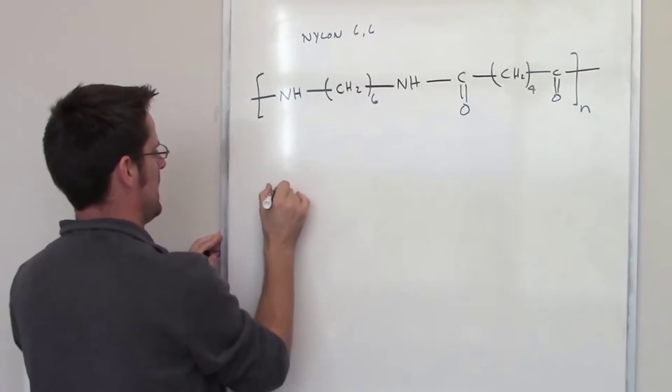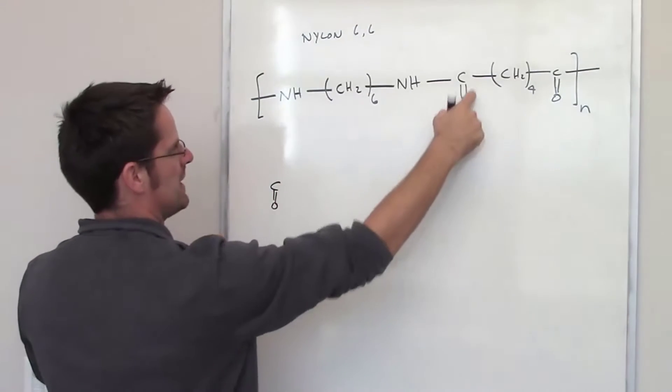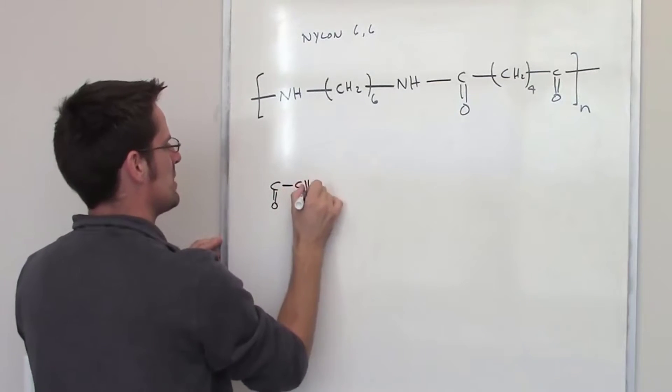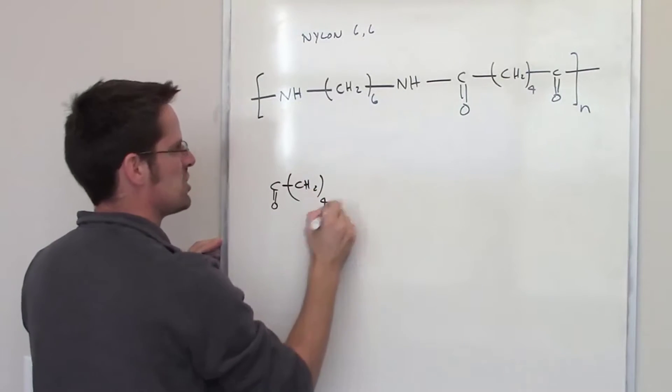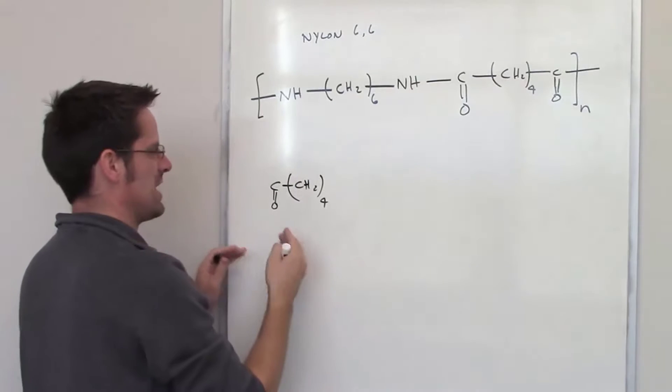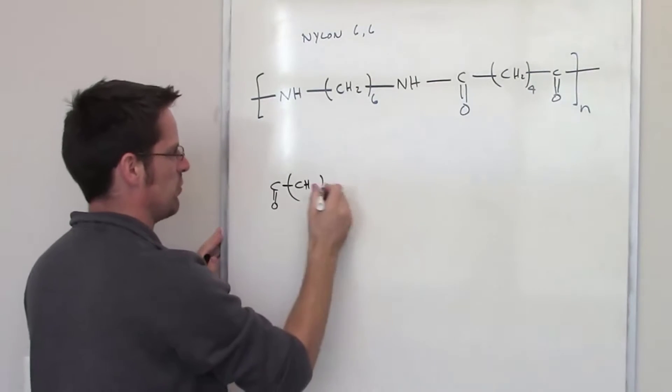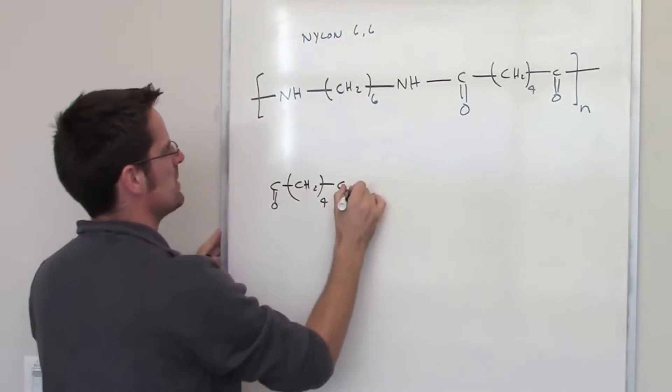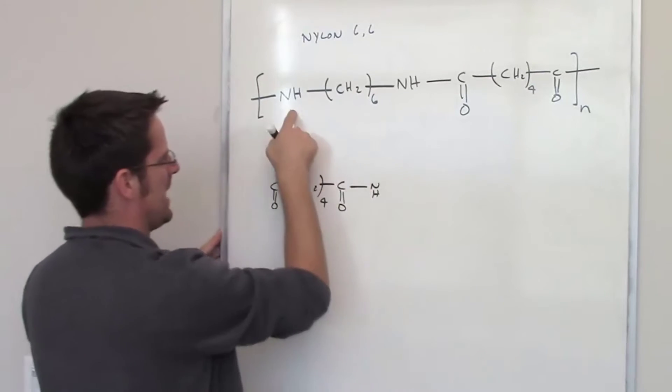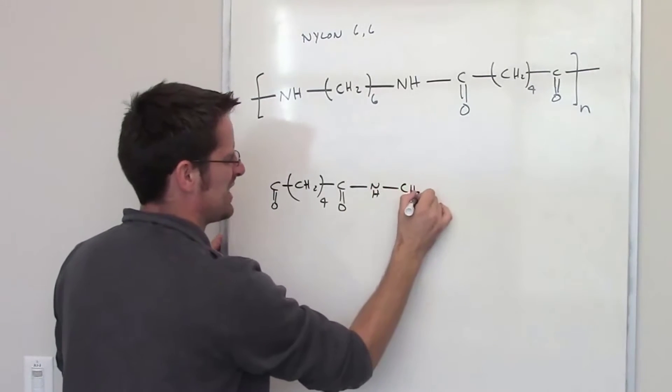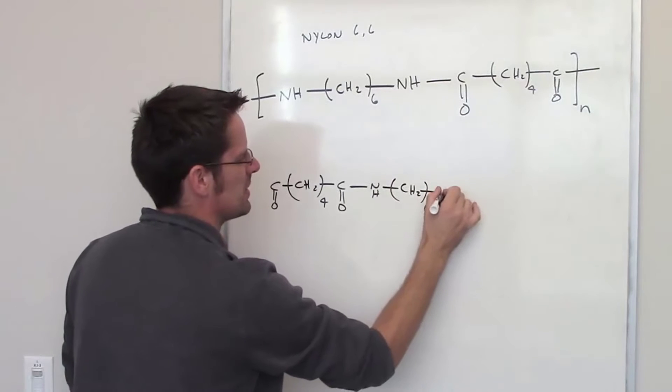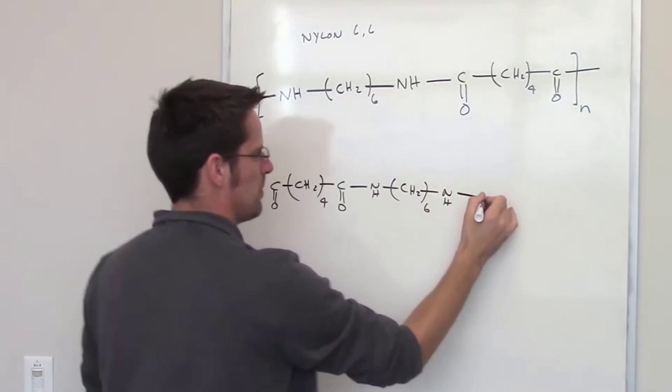So, let me see if I can redraw that. So, you can imagine, for example, what I've got is I've got this carbon here, double bonded to an oxygen, stuck to four CH2s in a row, and that's sort of an abbreviated way of saying there's a CH2CH2CH2CH2, four CH2s in a row, stuck to another one of these carbons, then it's bonded to this NH right here, stuck to six CH2s in a row, stuck to another NH, and then the pattern repeats itself.